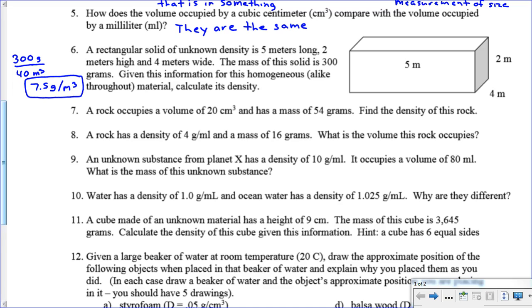For 7, this is a rock, occupies a volume of 20 centimeters cubed and has a mass of 54 grams, find the density. This one's just the basic calculation. We just say 54 divided by 20, and what we get there is 2.7 grams per centimeter cubed.